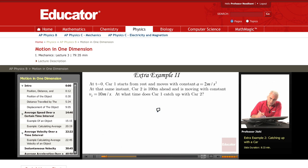Car 1 at t equals 0 starts from rest, meaning V0 equals 0. It has acceleration of 2 meters per second square.